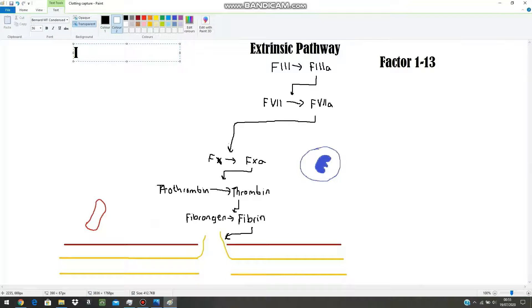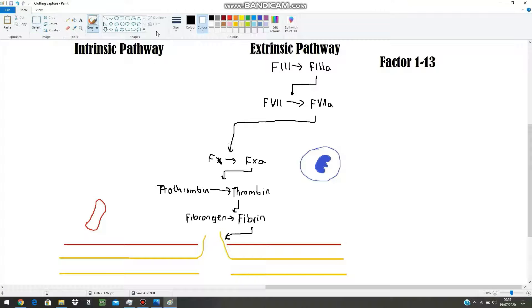So the pathway we just looked at is called the extrinsic pathway. Now let's look at the intrinsic pathway, the pathway that's been happening in the background at a much slower rate. And let's see how thrombin affects this.